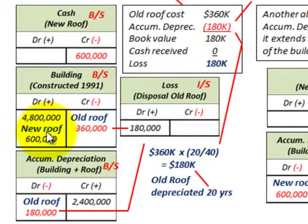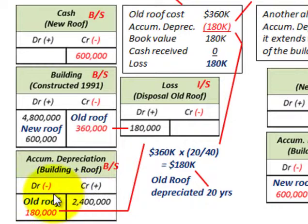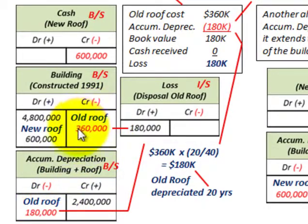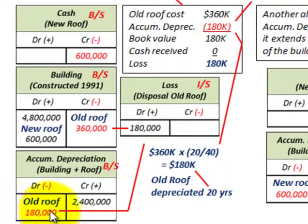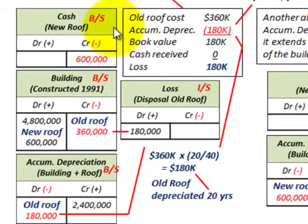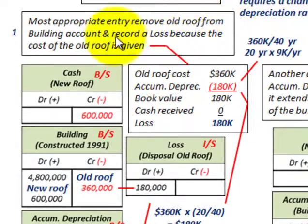We debit or increase our building account by $600,000 for the cost of the new roof. For accumulated depreciation on our building, that was 20 of the 40 years on the $4,800,000 original cost. We debit accumulated depreciation for the depreciation of the old roof of $180,000. Following the old roof: credit $360,000, debit $180,000 loss, and the balancing debit goes to accumulated depreciation. This completes the removal of the old roof from our building account.